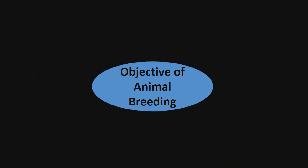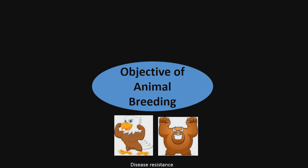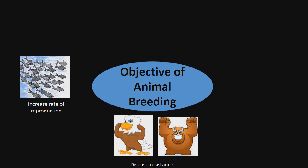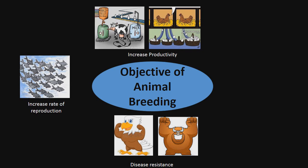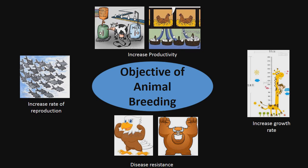The objectives of animal breeding include: to develop disease resistant animals, increased rate of reproduction, increased productivity, and increased growth rate.